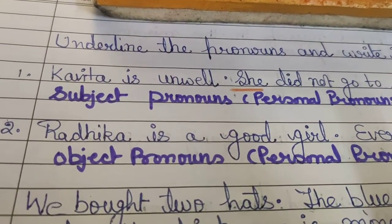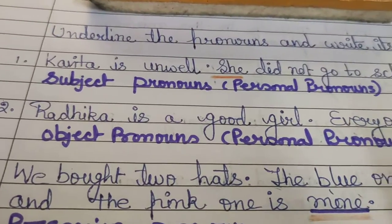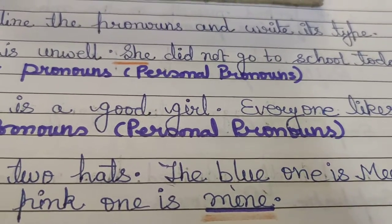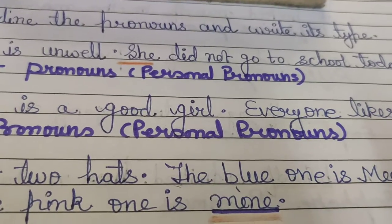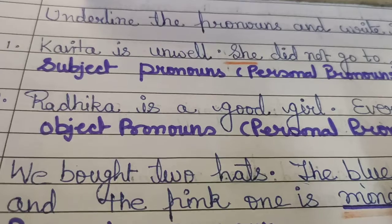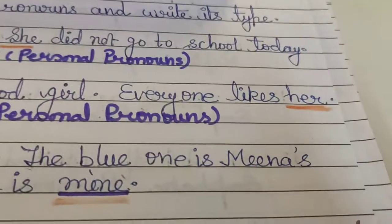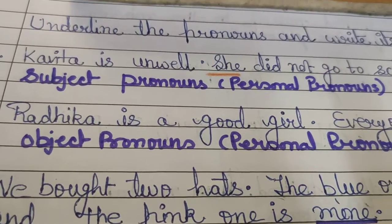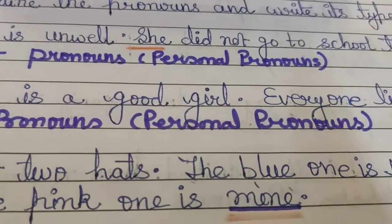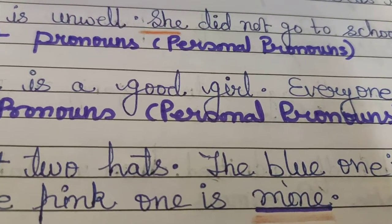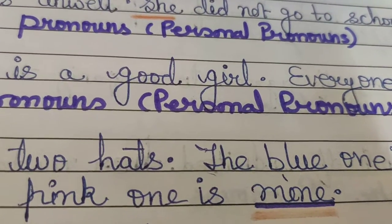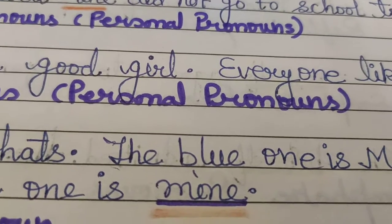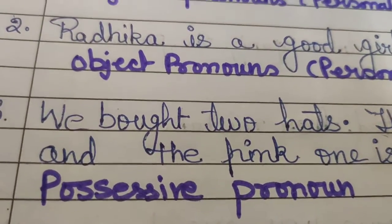The third sentence: We bought two hats. The blue one is Mina's and the pink one is mine. If you notice in the chart provided in the previous lecture, 'mine' is the form of possessive pronoun. The clue word is 'one'. Among the two — Mina and the speaker — who is showing ownership of the pink hat by saying 'the pink one is mine'? The person is not saying 'it is my pink hat', because when they say 'my hat', it becomes a possessive adjective. When there is no noun and the word 'mine' is used, it shows it is a possessive pronoun.